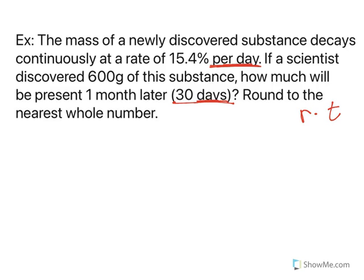So our formula is A(t) = A₀e^(rt). I highly recommend that you write the general formula down and then say, okay, what do I know? Let's plug in what we know. I know the amount after 30 days is what I'm trying to find, so write that down. My initial amount is 600 grams.